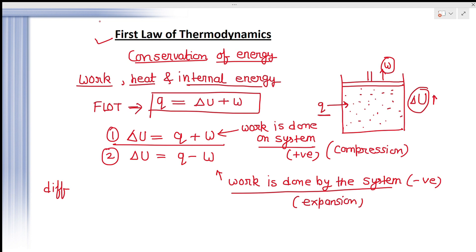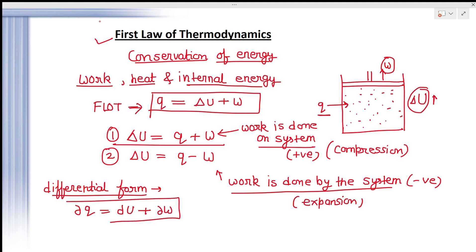In differential form, if an infinitesimally small amount of work is done and an infinitesimally small amount of heat is taken, we write δq = dU + δW. We use delta (δ) for q and W because they are inexact differentials, and d for U because it is an exact differential. I have made a separate video on exact and inexact differentials in our playlist.